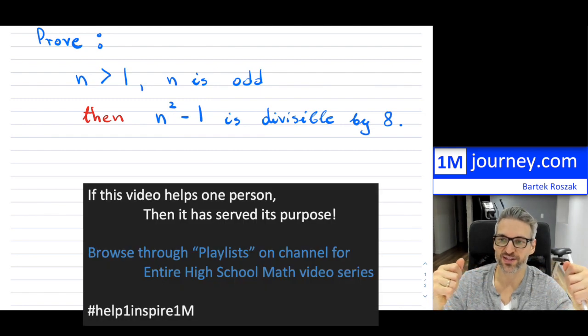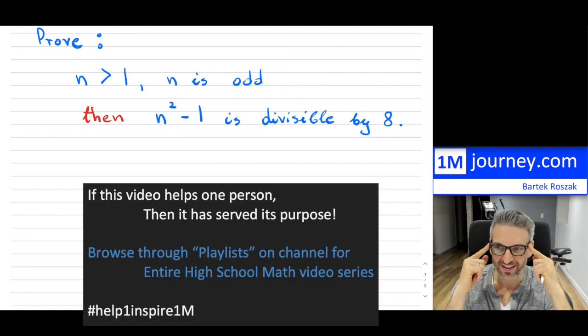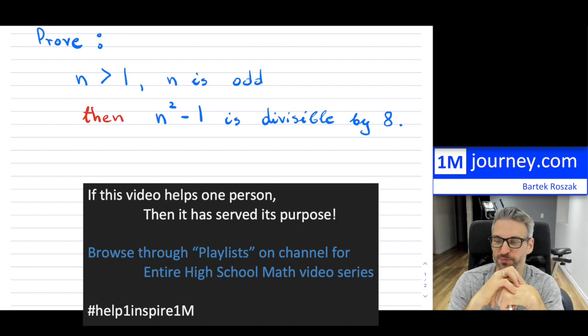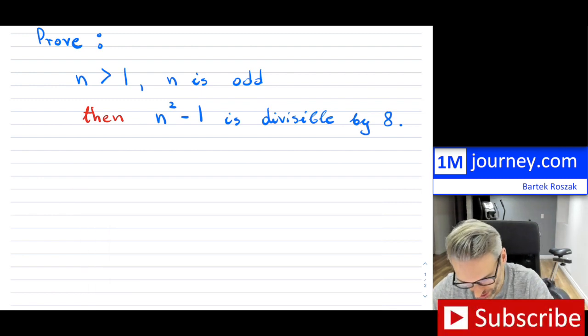Welcome in. All right, so let's prove this thing right here. So we have n which is greater than 1, but n is odd. So if you recall, in terms of odd and being greater than 1...